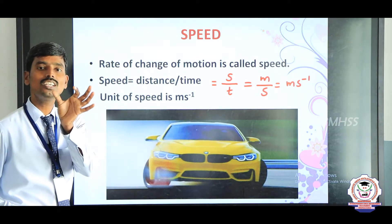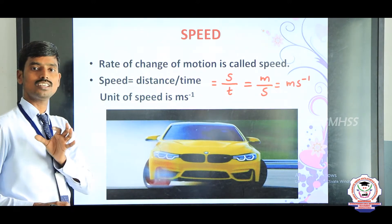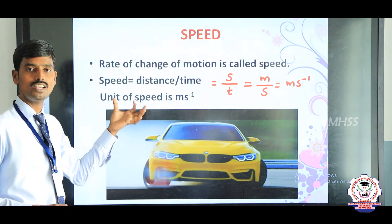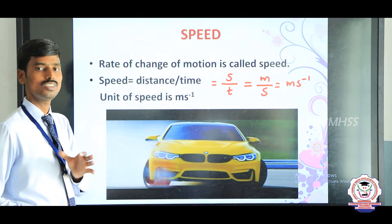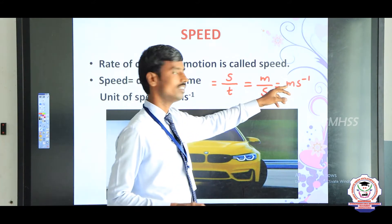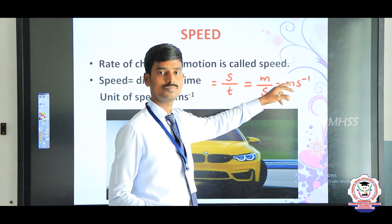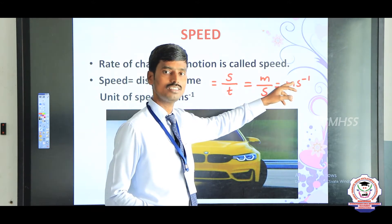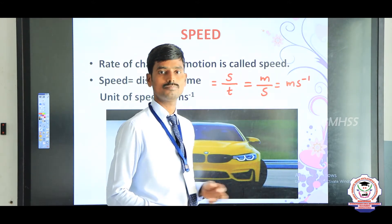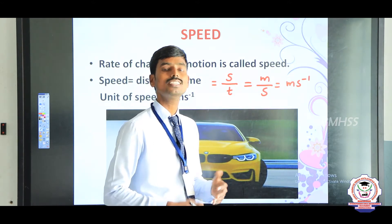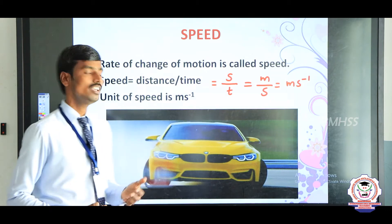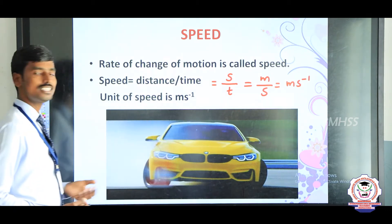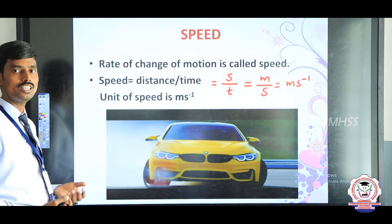What is the unit of speed in the CGS system? In the CGS system, the meter is replaced by centimeter, so the unit is centimeter per second, or centimeter second inverse. This is the CGS system unit of speed.